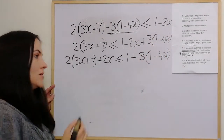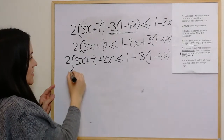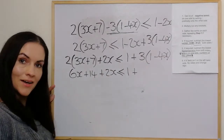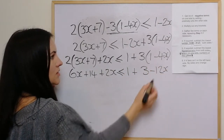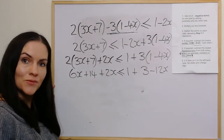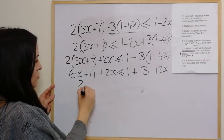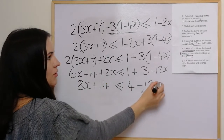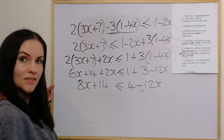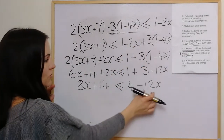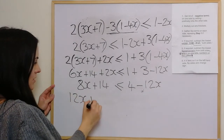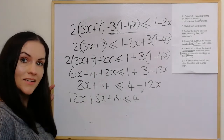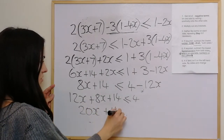Multiplying out the brackets: 6x plus 14 plus 2x is less than or equal to 1 plus 3 minus 12x. Gathering like terms on each side: 8x plus 14 on the left, and 4 minus 12x on the right. We can still go back to getting rid of negatives — we add the negative 12x onto the left side. So 12x plus 8x plus 14 is less than or equal to 4, which gives 20x plus 14 is less than or equal to 4.